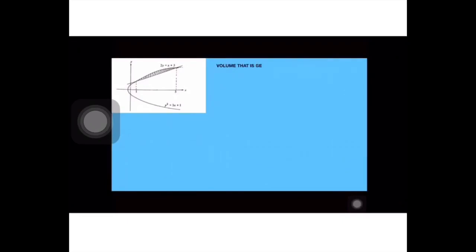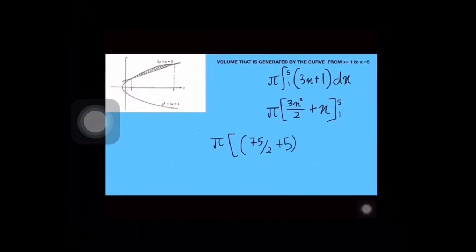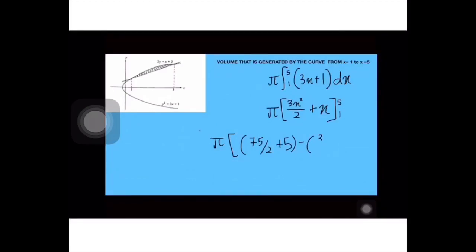Dah tahu range baru boleh cari volume. Sekarang apa kita nak buat? Kita kena cari volume untuk curve dahulu. Volume untuk curve, apa formula dia? Pi Y square dX sebab dia nak add x-axis, kenal dX. Kalau kita perasan, equation curve memang dah Y square. Kita tinggal nak masukkan je 3X tambah 1, tak payah squarekan dah.